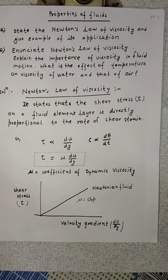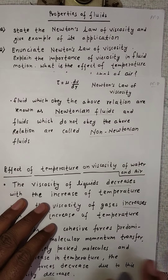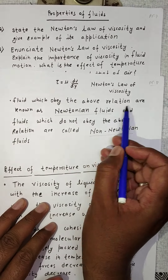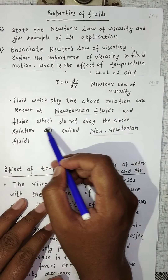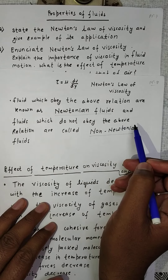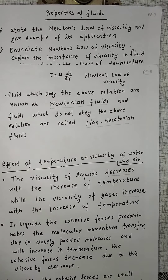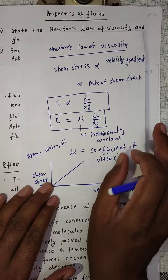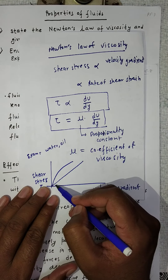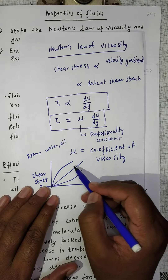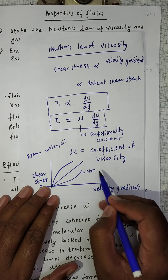Fluids which obey the above relation are known as Newtonian fluids. Fluids which do not obey the above relation are called non-Newtonian fluids. If the fluid behavior on the graph does not follow a straight line, those fluids are known as non-Newtonian fluids.